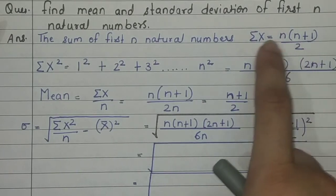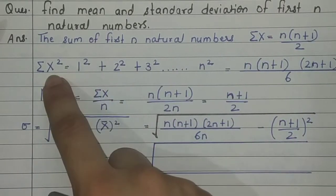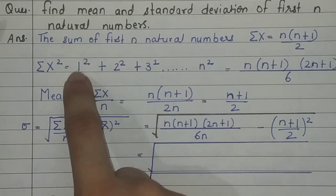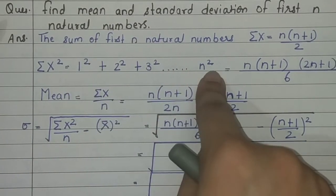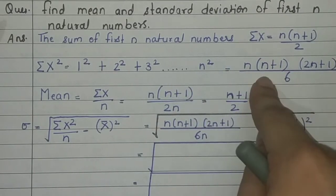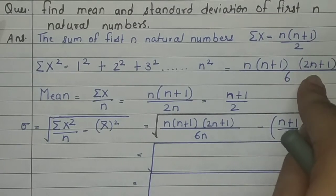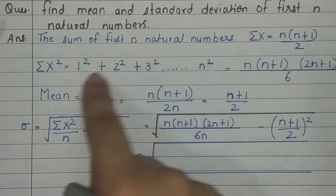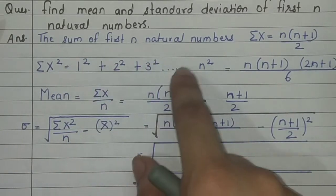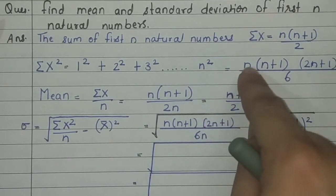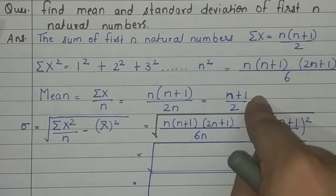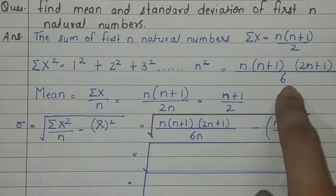For instance, for n=6, the sum of squares 1²+2²+3²+4²+5²+6² = 6(6+1)(2×6+1)/6. For n=20, it would be 20(20+1)(2×20+1)/6. These are the two formulas we already know from school. Now let's substitute them into the formulas for mean and standard deviation.